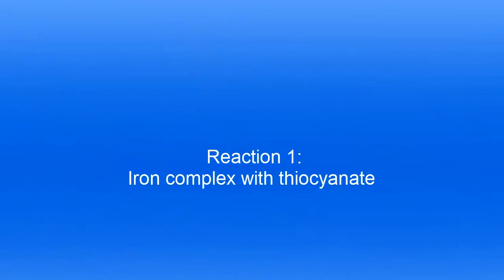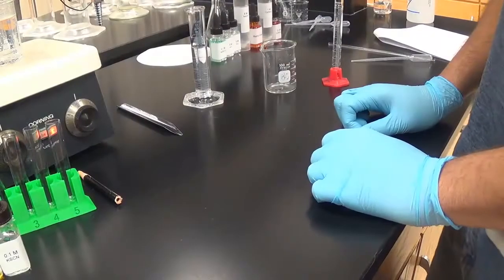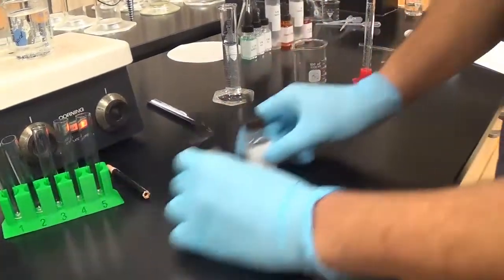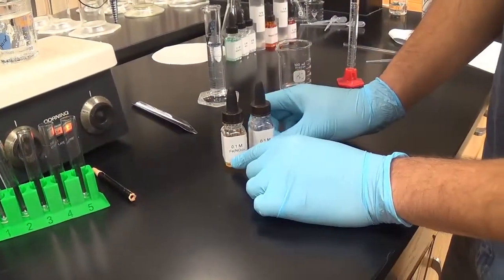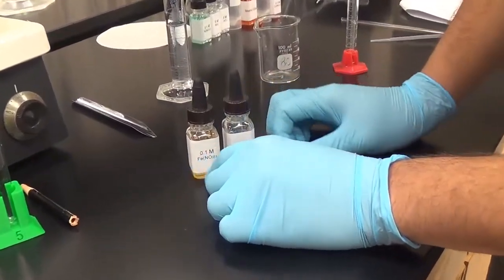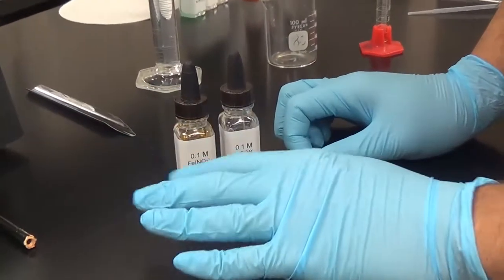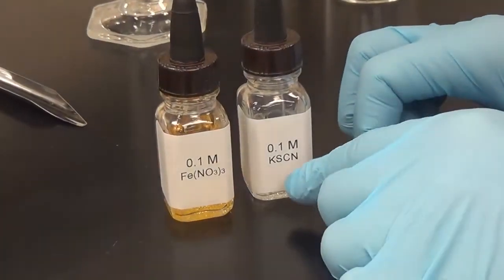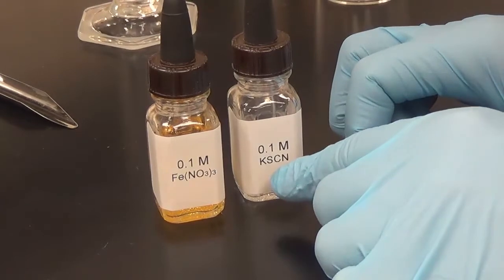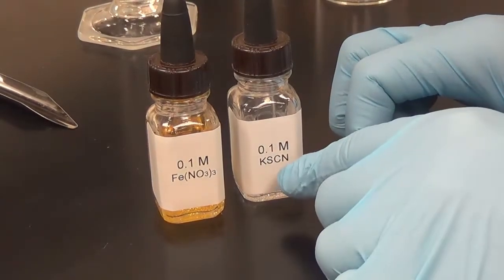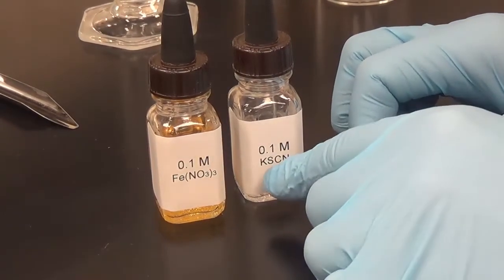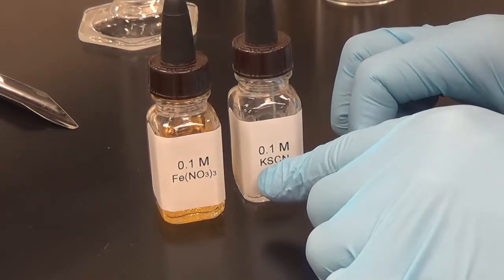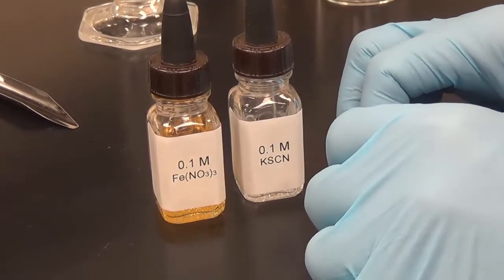Our first reaction is reacting iron(III) with thiocyanate. It's iron nitrate — iron plus three. Don't worry about the nitrate; that's called a spectator ion. And potassium thiocyanate, SCN minus — don't worry about the potassium because it's a counter ion.